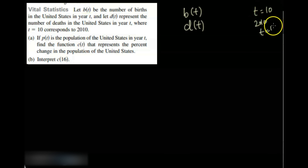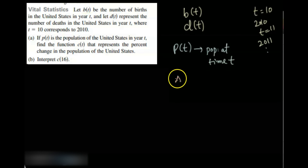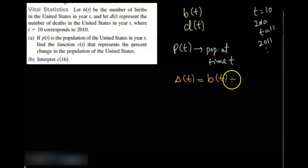So t equal to 11 means 2011, and so on. If p of t is the population of the United States in year t, and c of t represents the percentage change in the population, then the change at time t is the total people born minus deaths — an application of the difference of two functions.